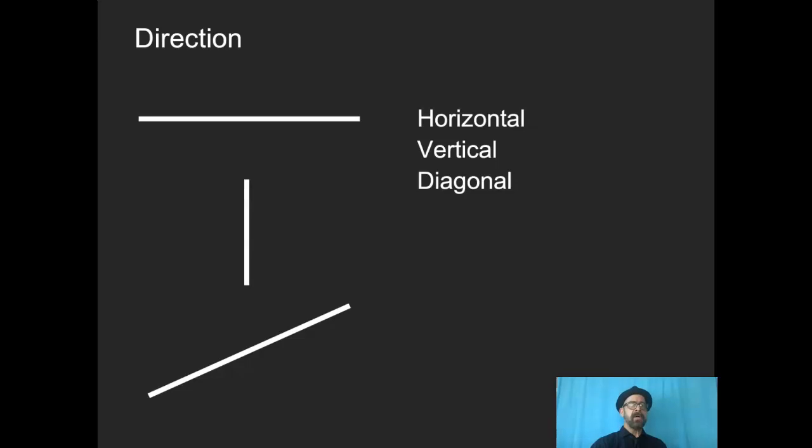The direction: horizontal, vertical, diagonal. Each one of these things implies certain ideas to the viewer. Something that's horizontal has a very different impression than something that's vertical. And we all know how important diagonals are to creating motion.